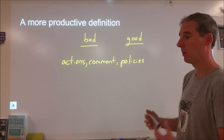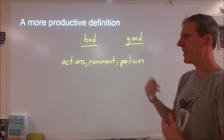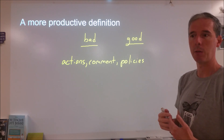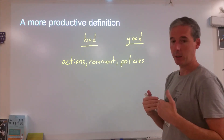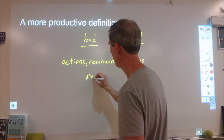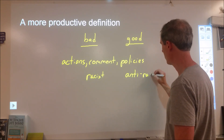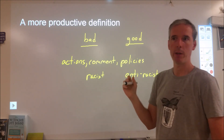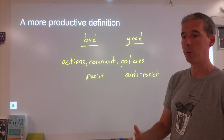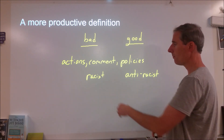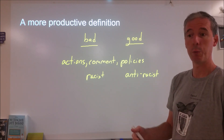That can be institutional policies — like a dress code at school that is racist — or it might just be general guidelines. I might really like being polite, and that might not turn out well for some groups of people because it might be used as a weapon. When we talk about a more productive definition, we want to focus on things we can control and view them through the lens of: is this racist or is this anti-racist? I would define racism as something that has a negative impact on someone or a group of people because of their race.